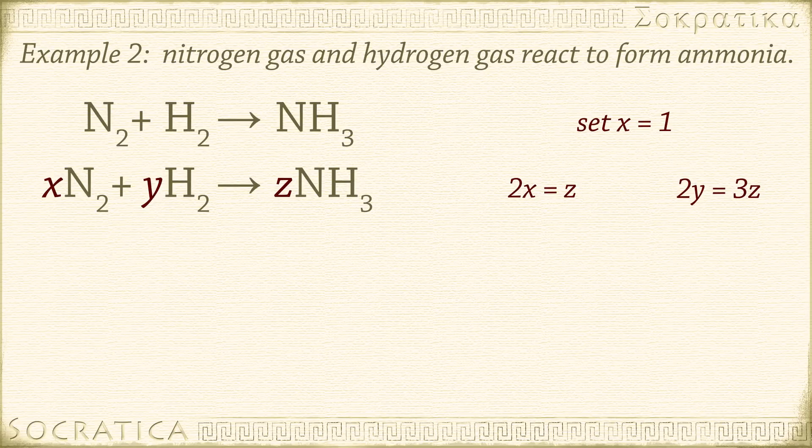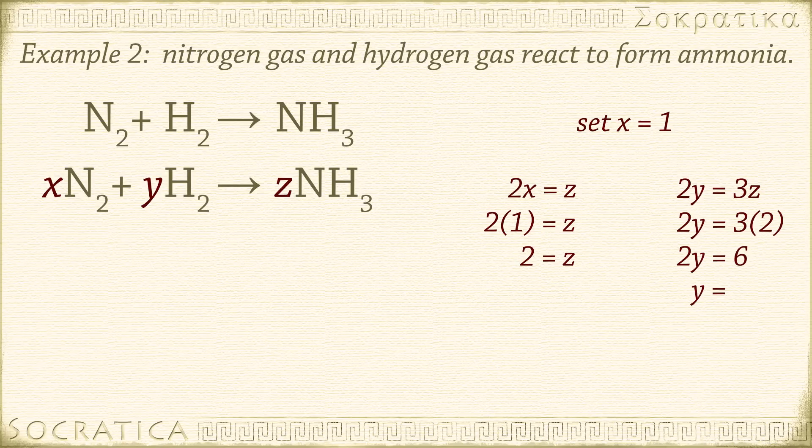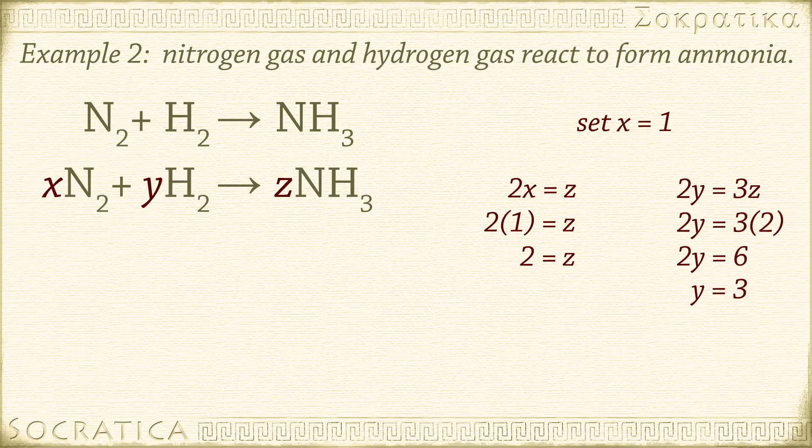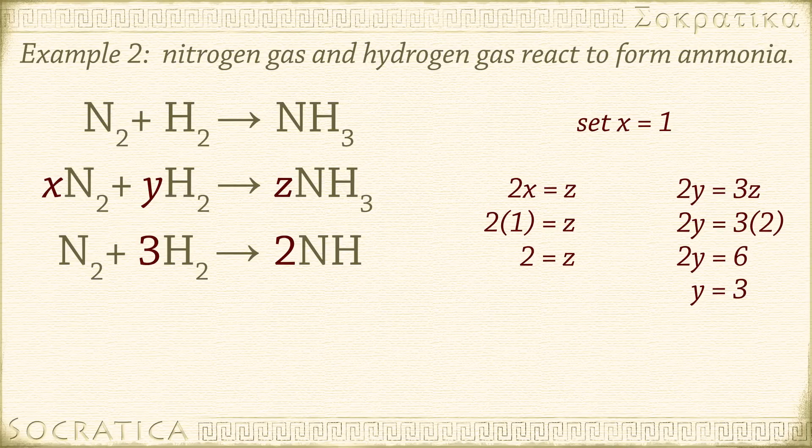Let's set X equal to 1. That means we're starting with one molecule of nitrogen gas. 2 times 1 equals Z. 2 equals Z. Substitute that into the second equation, 2Y equals 3Z. So we have 2Y equals 3 times 2. 2Y equals 6. Y equals 3. Plug those coefficients into our equation, XN2 plus YH2 yields ZNH3. We get 1N2 plus 3H2 yields 2NH3. Remember, the coefficient of 1 is understood, so we rewrite this as N2 plus 3H2 yields 2NH3. Double-check your work by counting up the atoms on both sides. On the left, we have 2N and 6H. On the right, we have 2N and 6H. That's balanced.